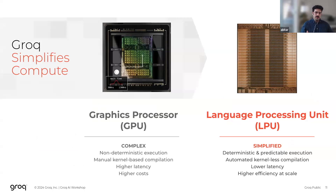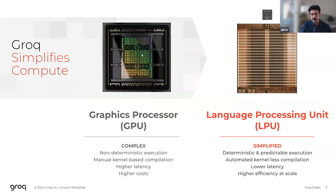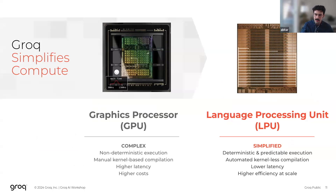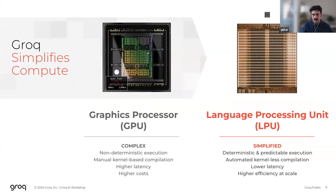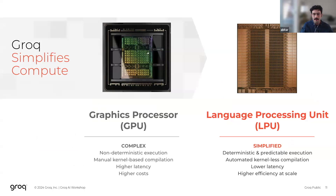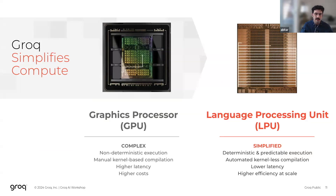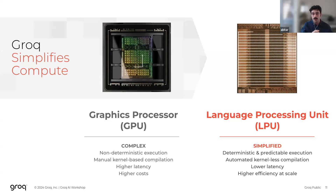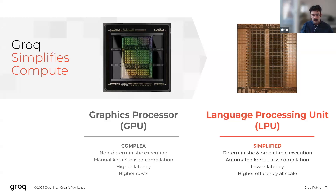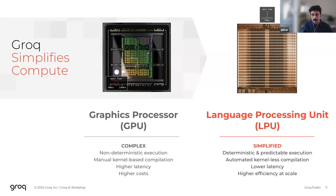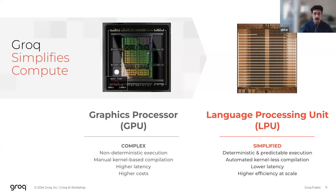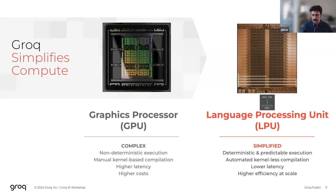Fundamentally, the soul of the LPU is its determinism and its predictability in execution and data movement. This predictability really empowers our compiler and our software stack. It allows us to build a fully automated kernel-less compiler that can efficiently and automatically map workloads onto the target hardware. Not only does this predictability empower our compiler, it also allows us to achieve predictable low latency, which is crucial for inference applications.